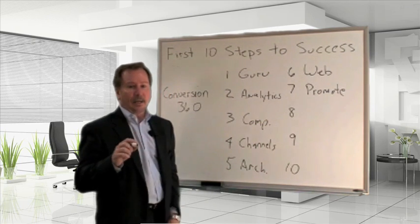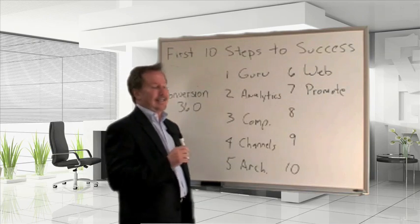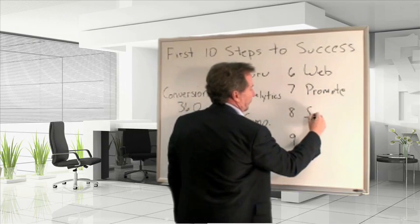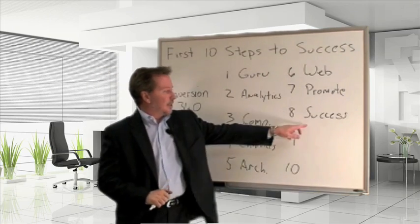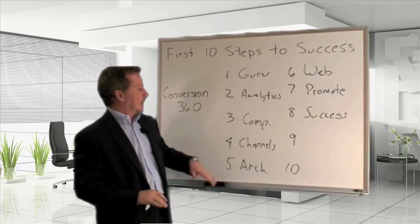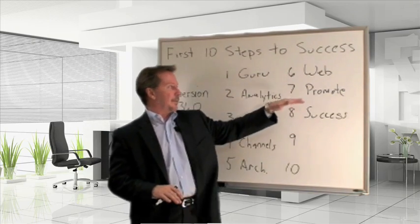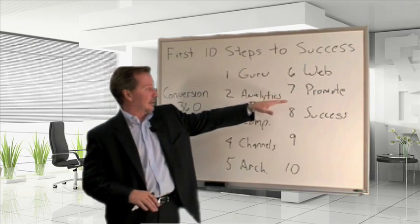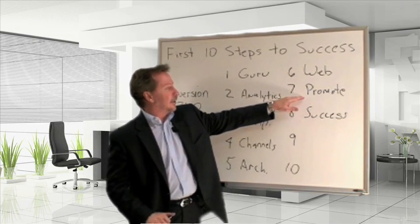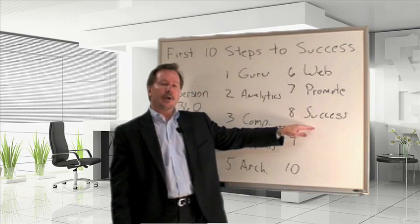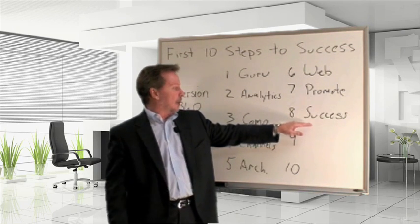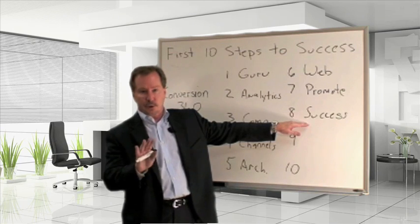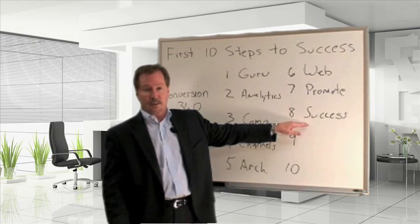Number eight is analyze the keyword success. When you're analyzing your keyword success, what you're doing is relating the keywords that you're using up here through your promotion and your web, your title tags. We'll get to that later. The content of your website, all of these things, you want to go back and you want to see which ones are successful, ones that are proven, are proven keywords that are going to produce the results or are producing results that you're looking for.